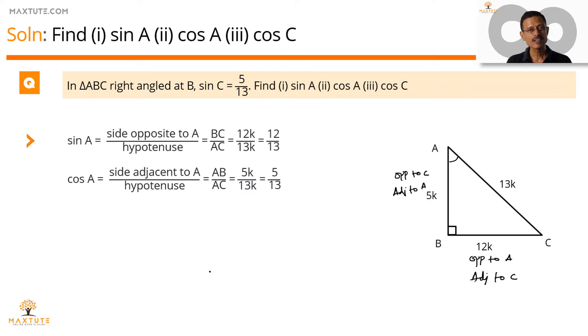Lastly cos C. Cos C is adjacent by hypotenuse. Adjacent to angle C. The side adjacent to angle C is BC. BC by AC is equal to 12 by 13.